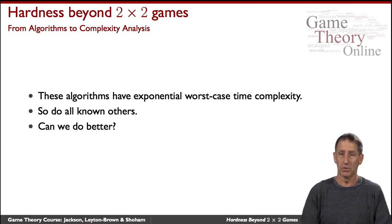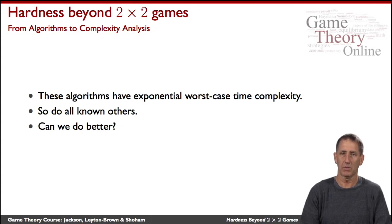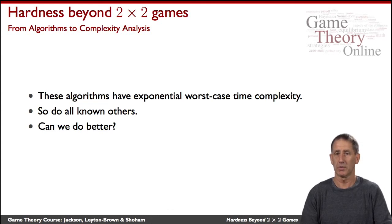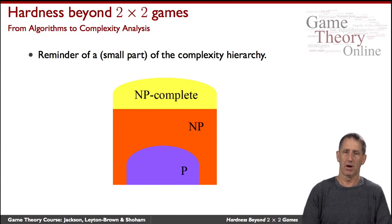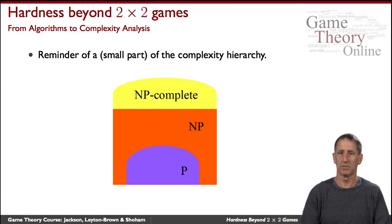These procedures do have exponential worst case. So the question is: can we do better? Are there procedures that are less than exponential in the worst case? That takes us from the realm of complex algorithms to the realm of complexity analysis.